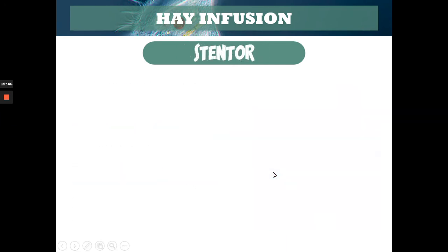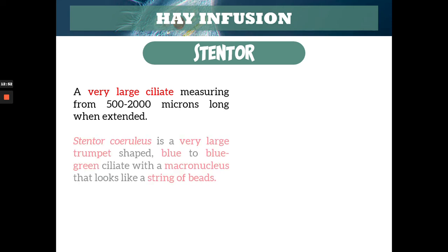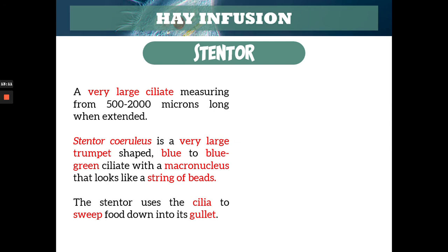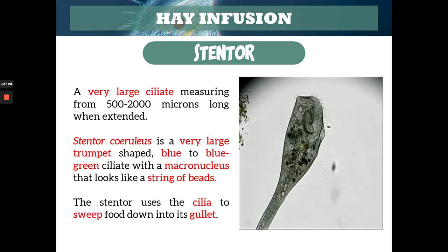Next we go to stentor, which is another ciliate. It's a large ciliate, 500 to 2,000 microns. We have a species here, Stentor coeruleus — a very large, trumpet-shaped, blue to blue-green organism with a macronucleus that looks like a string of beads. This is just an example of stentor. The stentor uses its cilia to sweep food down into its gullet or esophagus — for feeding.